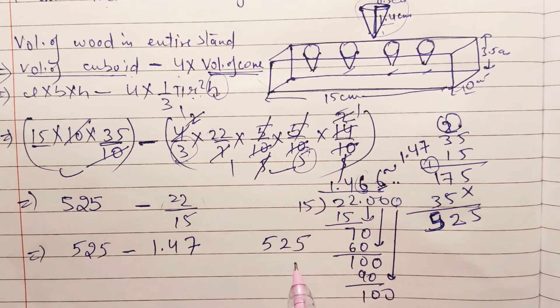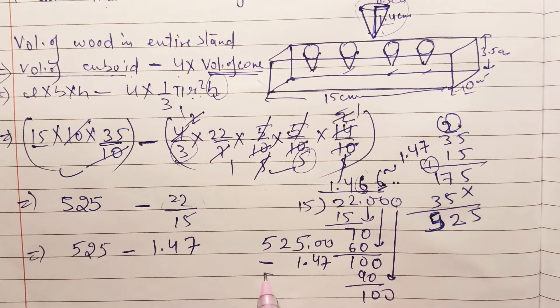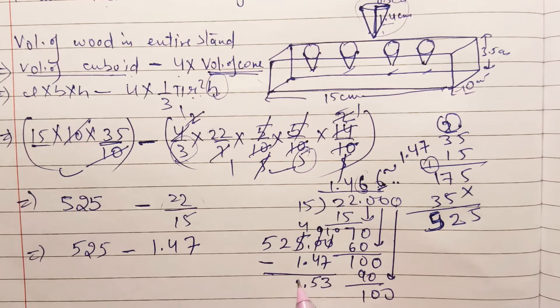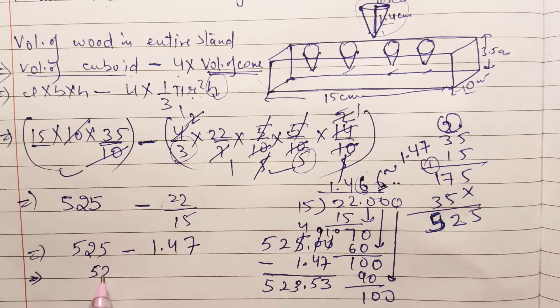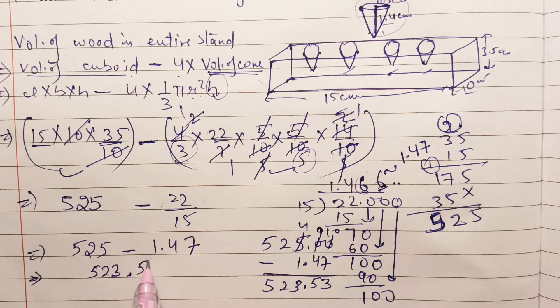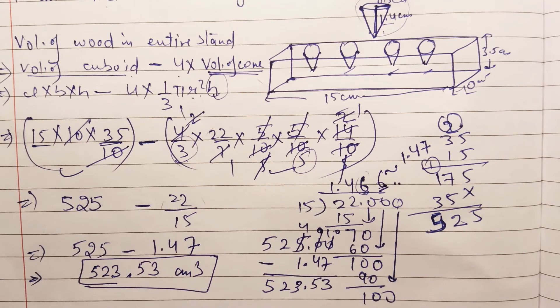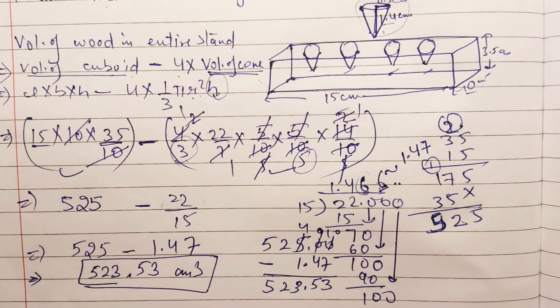So 1.47 approximately I can write. Now solve this. 525 minus 1.47. I am getting the answer: 523.53 cm cube. So this much is the volume of wood in this entire pen stand.